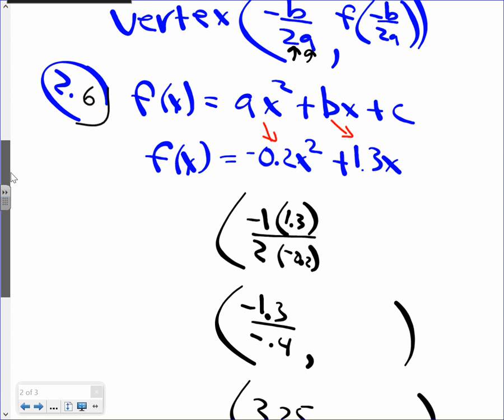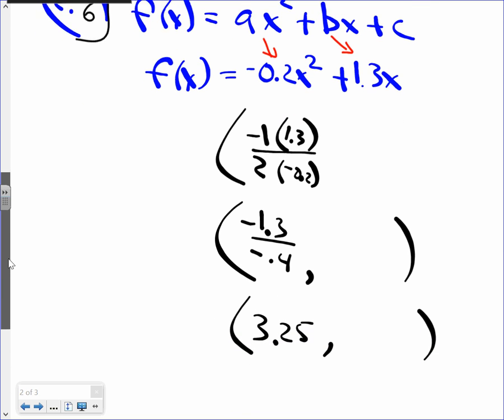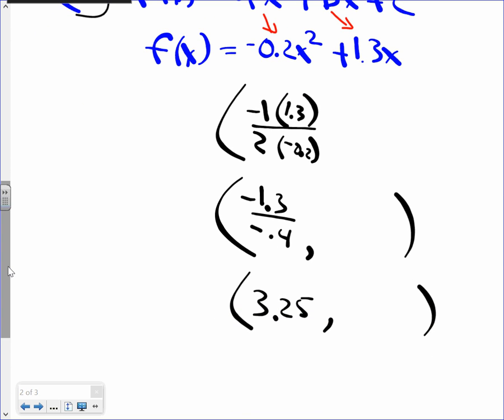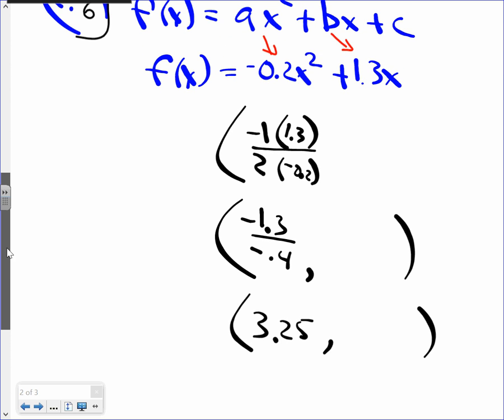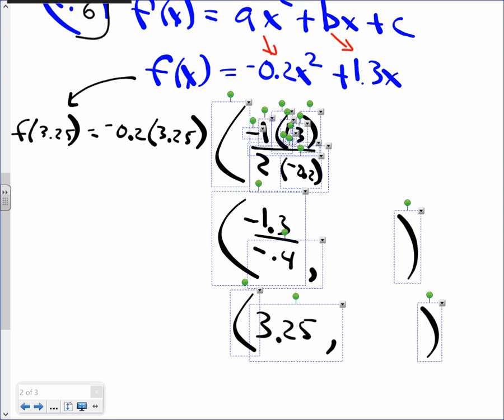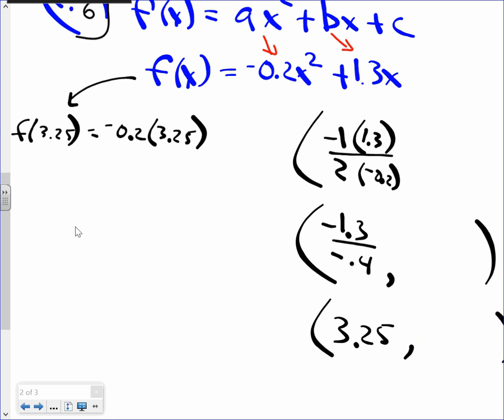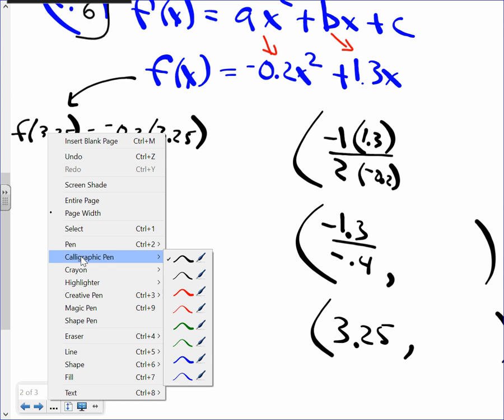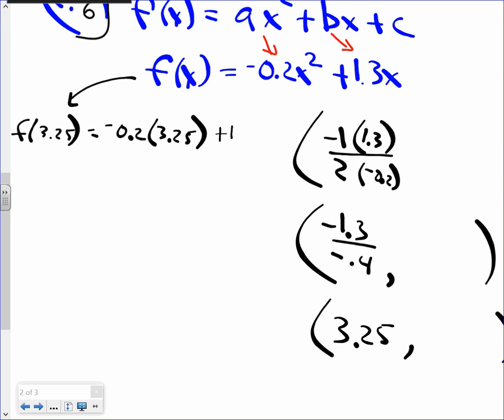Now, the function at the vertex. How high is that mouse? Let's check it out. Wherever I see x, I'm replacing it with 3.25. A lot of decimals, but don't worry. The function at 3.25 is negative 0.2 times 3.25 squared plus 1.3 times 3.25. Let's see what happens. Let's see if the mouse makes it.